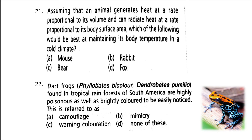Next: assuming that an animal generates heat proportional to its volume and radiates heat proportional to its body surface area, which of the following would be best at maintaining body temperature in cold climate? The answer is option C: Bear. In a bear, the surface area is less as compared to volume. Thus, it will generate more heat and radiate less, making it suitable for living in cold climate.